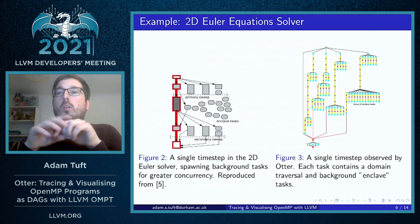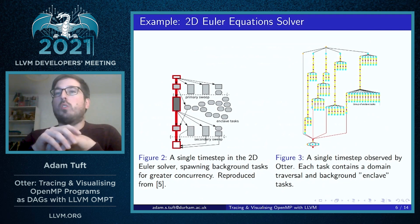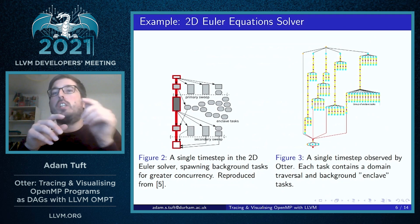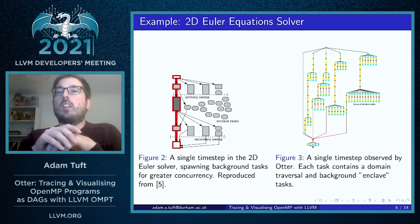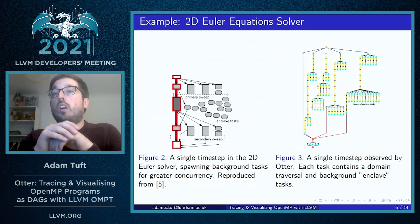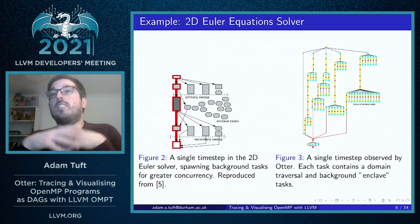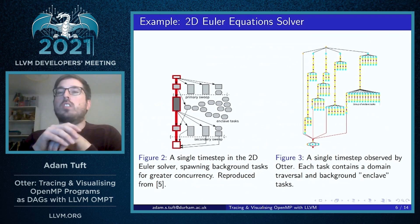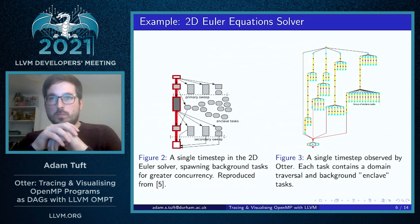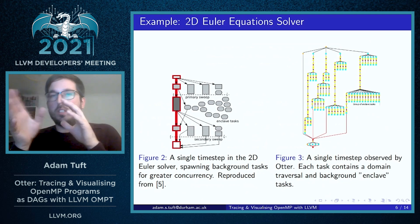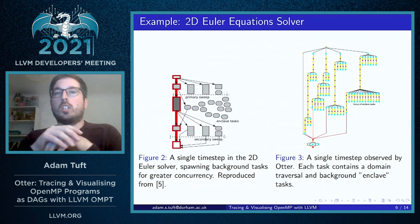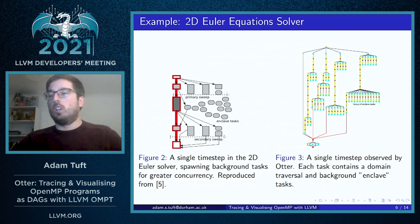Each thread generates along the way a set of enclave tasks intended to be executed in the background, and this matches quite well with the prediction we see on the left.